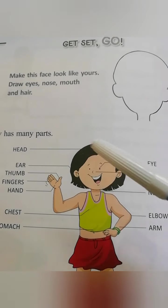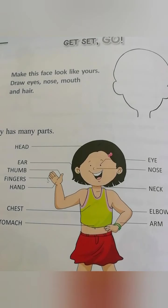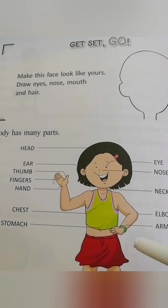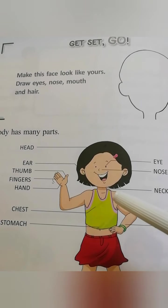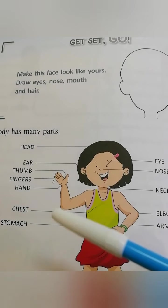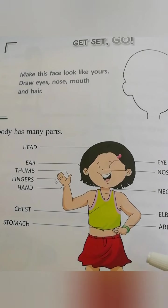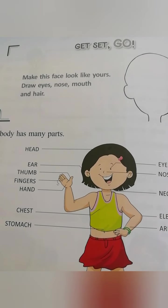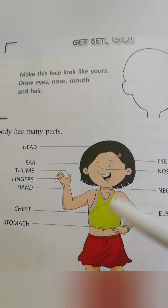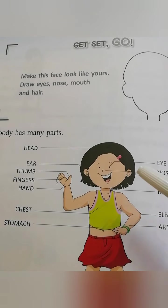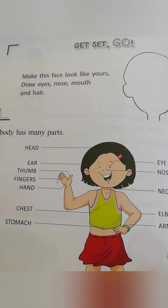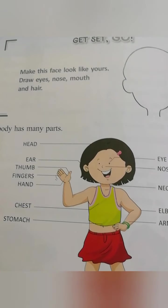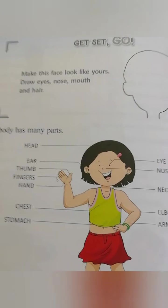Look — our body. Here is a girl. We have many body parts, and each part is different. All parts have different names, and all body parts do special work. All parts are useful. Some parts of our body are in pairs. Children, we will have a close look at our body parts.